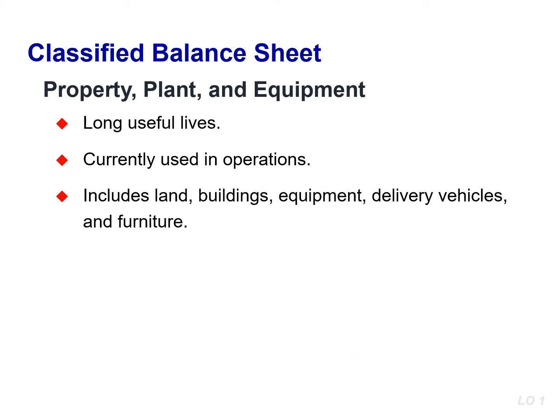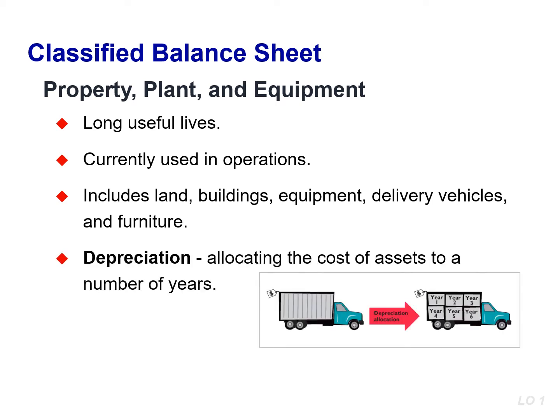Property, plant, and equipment are assets with relatively long useful lives that are currently used in operations. It includes land, buildings, equipment, delivery vehicles, and furniture. How do we allocate the benefit of these assets over the multiple years that we expect them to benefit the corporation? The answer is depreciation.